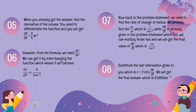The seventh step: now back to the problem. We need to find dr/dt. We already found dr/dV equals 4 over 3π r², and dV/dt equals 5 as given. Multiplying these gives dr/dt equals 20 over 3π r². The last step is to substitute r equals 2 into dr/dt, giving the final answer of 0.5305 meters per second.